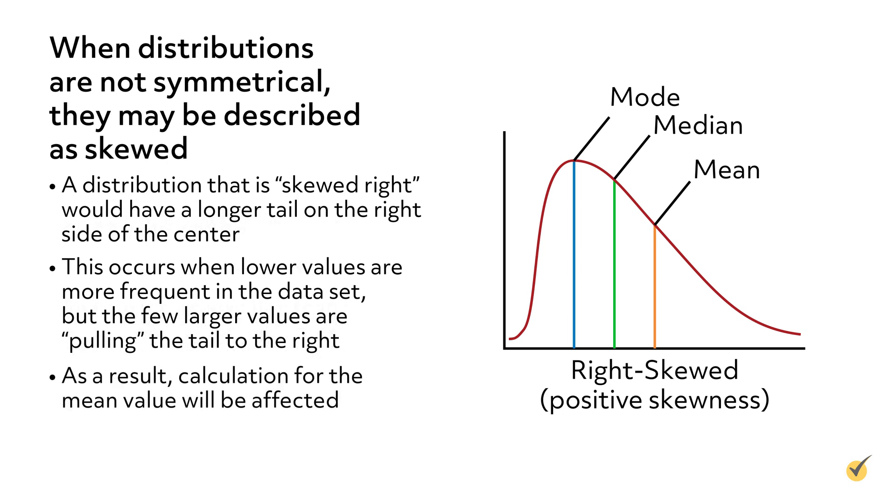As a result, calculation for the mean value will be affected. The mean value will be higher than the median in a right skewed distribution.